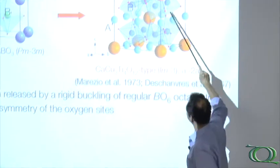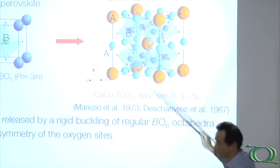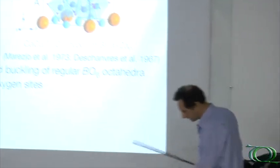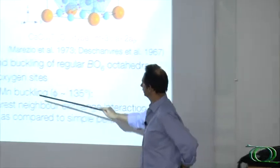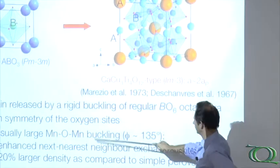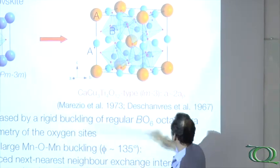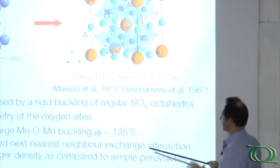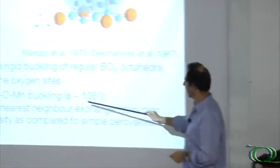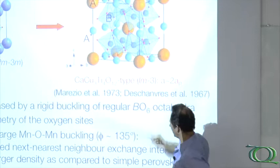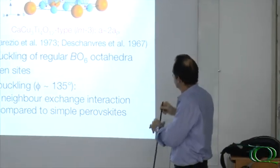Also, this is a high symmetry structure and the oxygen sites cannot move very freely, so the distortion pattern is very limited. Because of the large tilt, the buckling of the MnO angle is so large that this enhances the next nearest neighbor exchange interaction because the structure is more compact.